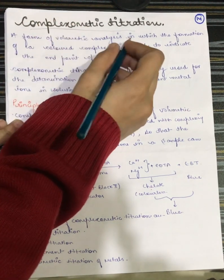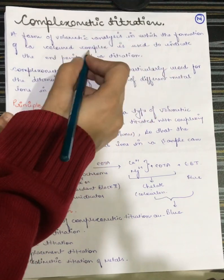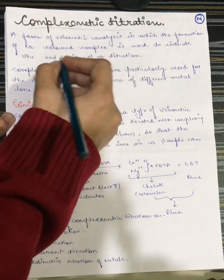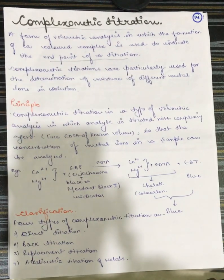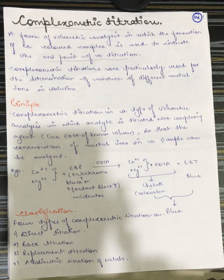The form of volumetric analysis in which the formation of a colored complex is used to indicate the end point of titration. I mean, when we do analysis, we perform titration in so many points. When we have completed our titration, we will get a color change. So it will indicate that our end point is reached and our reaction is complete.